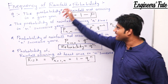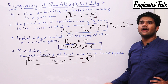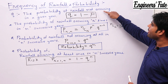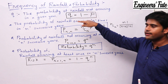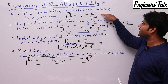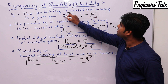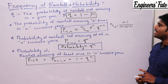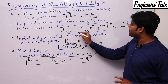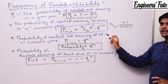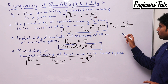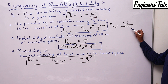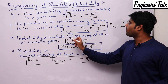Q is the probability of rainfall not occurring in a given year, and Q equals 1 minus P. Remember this. Next, the probability of rainfall occurring r times in n successive years is given as P(r, n), where P(r, n) equals nCr into P to the power r into Q to the power (n minus r), and nCr equals n factorial divided by (n minus r) factorial into r factorial.